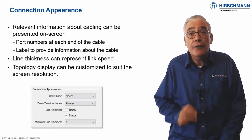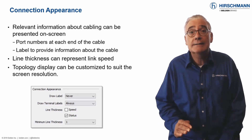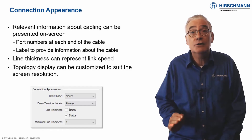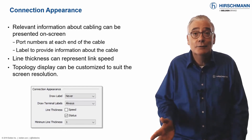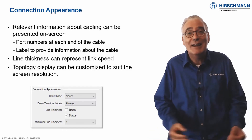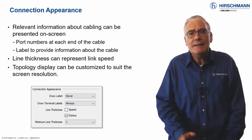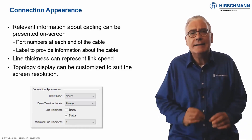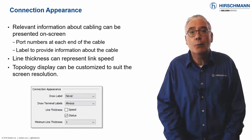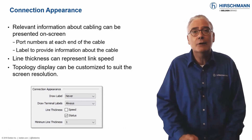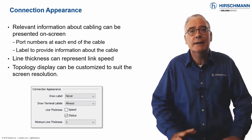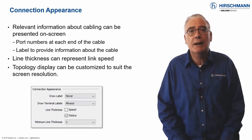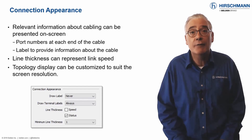The thickness of the cable lines can be configured to show link speed, or link status, or indeed both. For best effect, select a full information display when creating your network documentation, and a reduced information display for live operation.